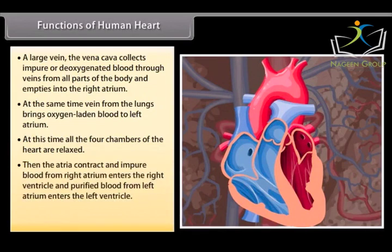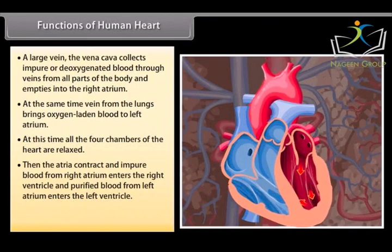Then the atria contract and impure blood from right atrium enters the right ventricle and purified blood from left atrium enters the left ventricle.